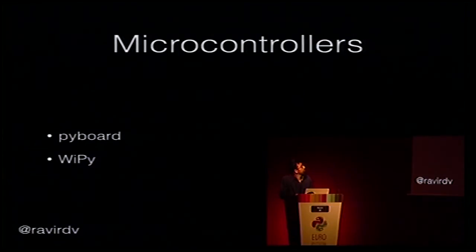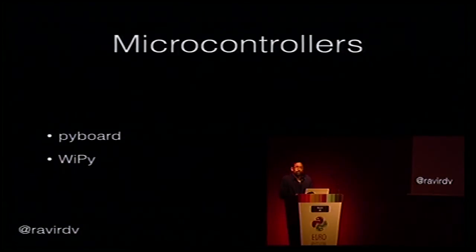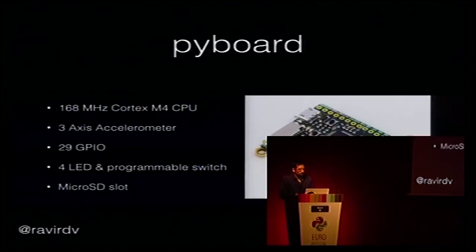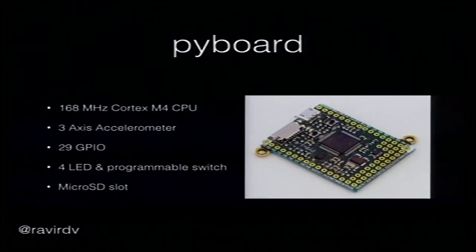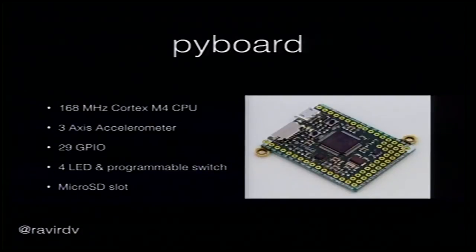One option is PY board, which is a MicroPython project. PY board has an accelerometer, a 168 MHz CPU, GPIOs, some LEDs, and a switch. Building simple applications using this board is very straightforward — it gives a Pythonic interface to interact with all connected hardware. It also has a microSD slot and lets you access the file system, so you can capture logs, store them locally, and sync periodically to save battery.